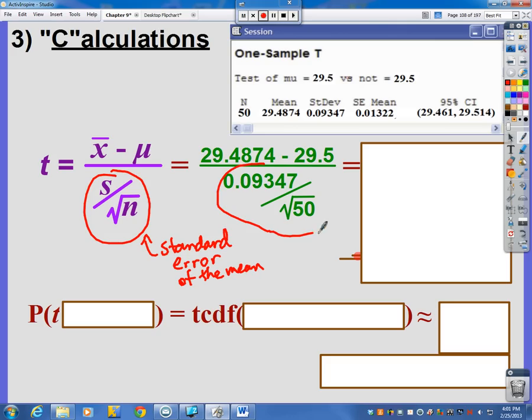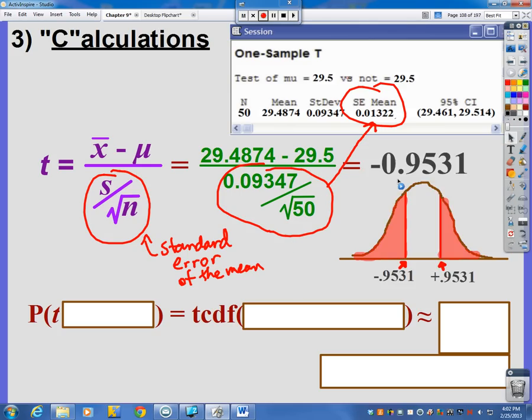So what is 0.09347 divided by the square root of 50? It's this number right here. So we didn't even really have to put this. You could just put 0.01322 right here in the denominator, because that's what number you're going to get, fool.